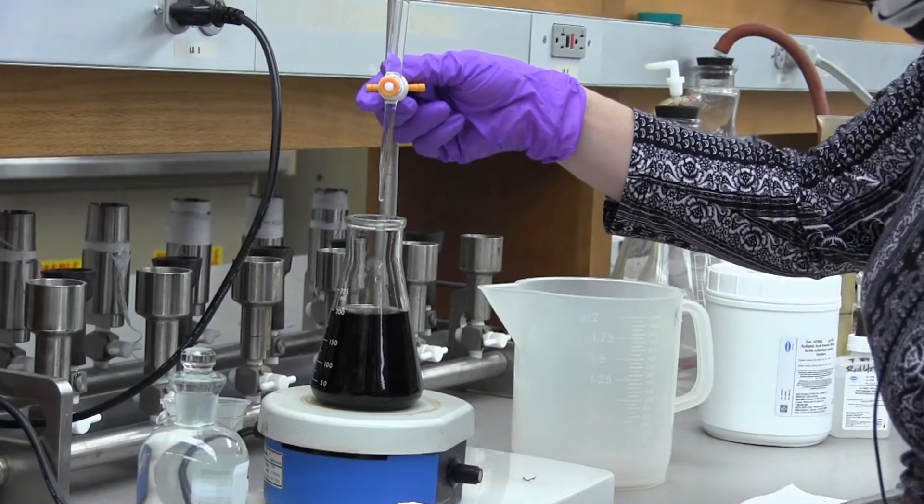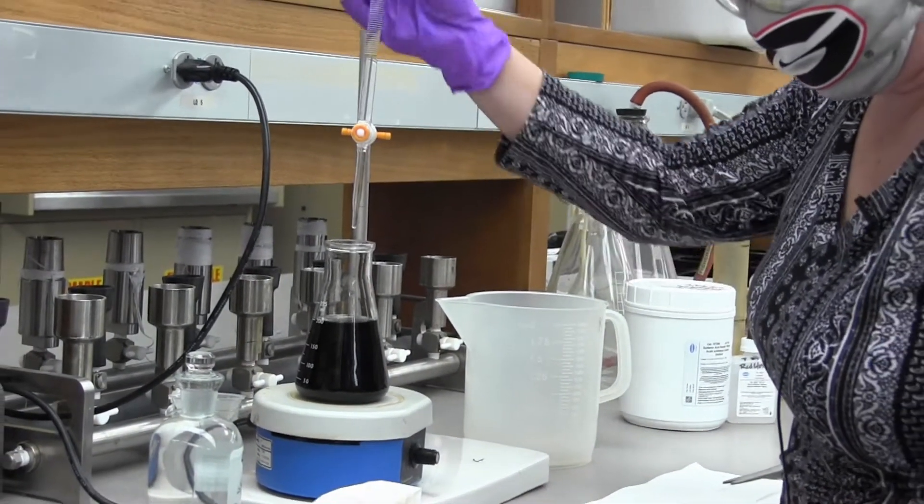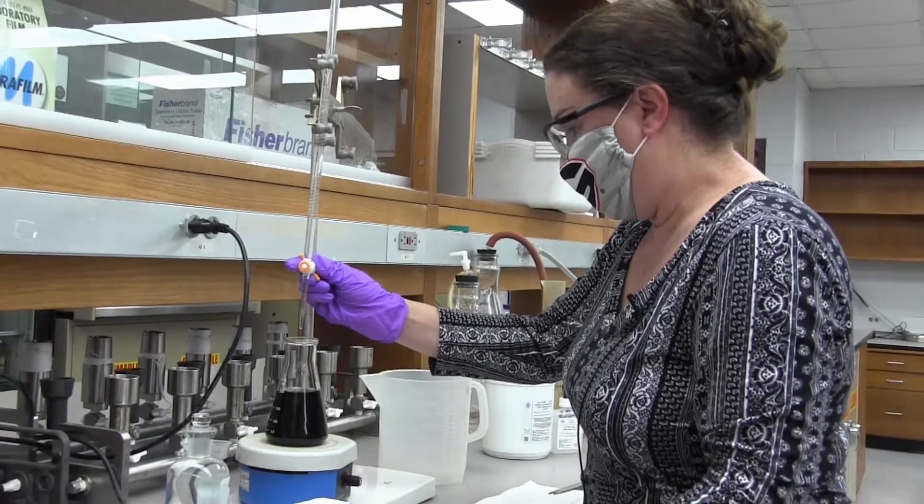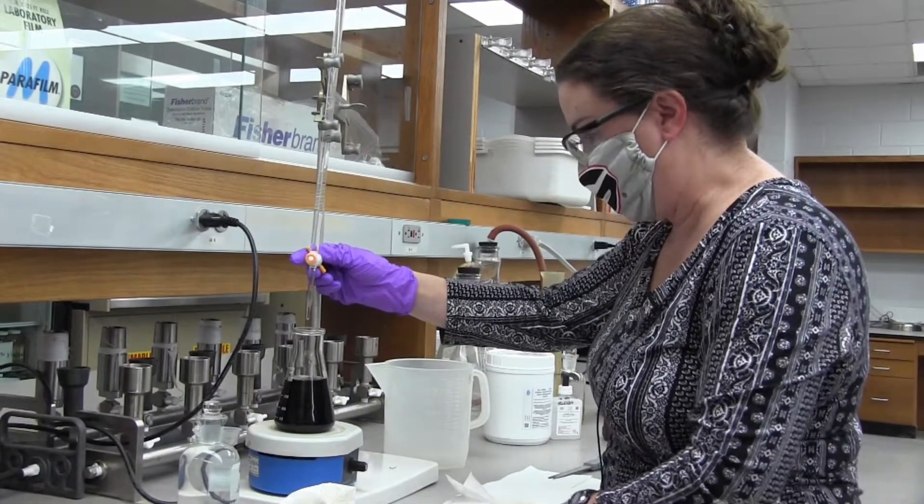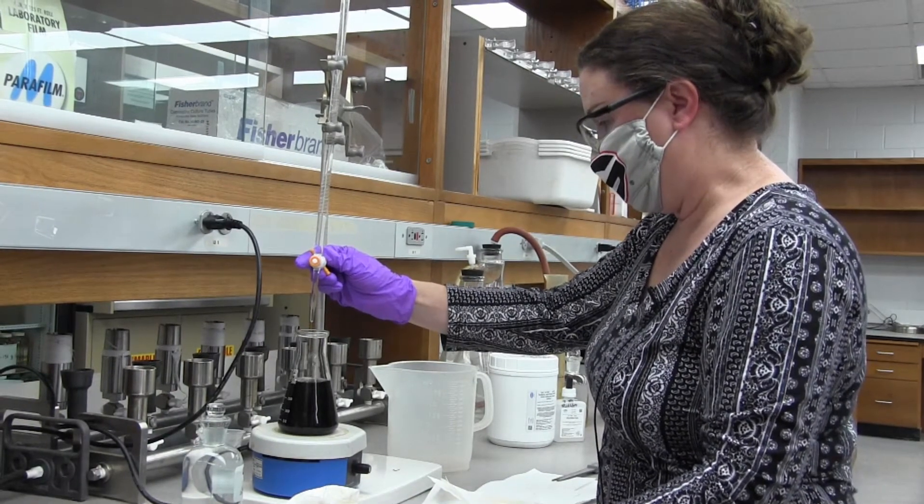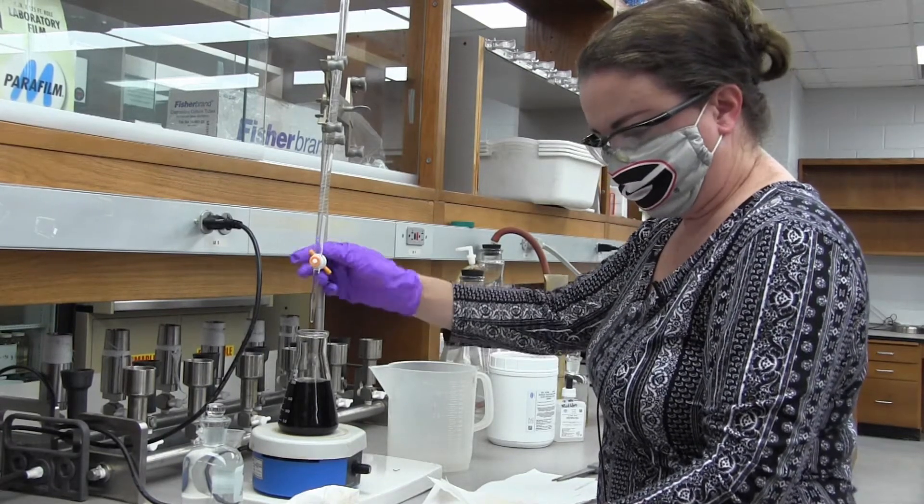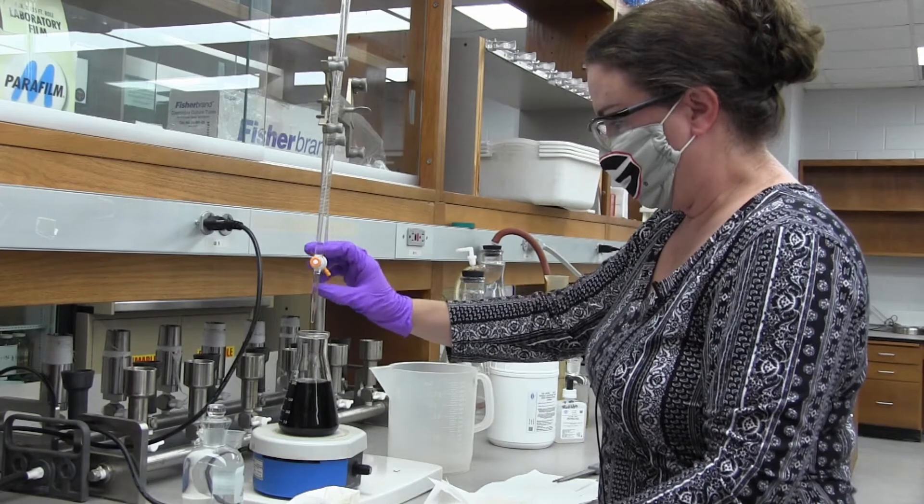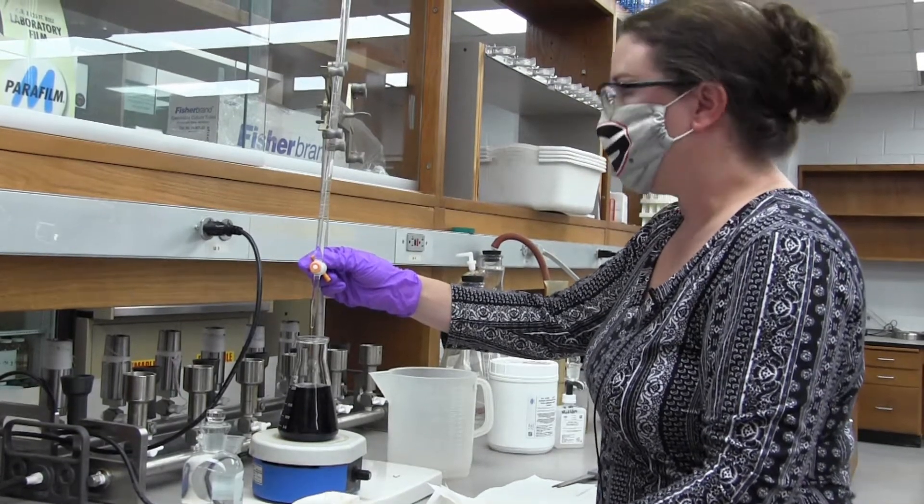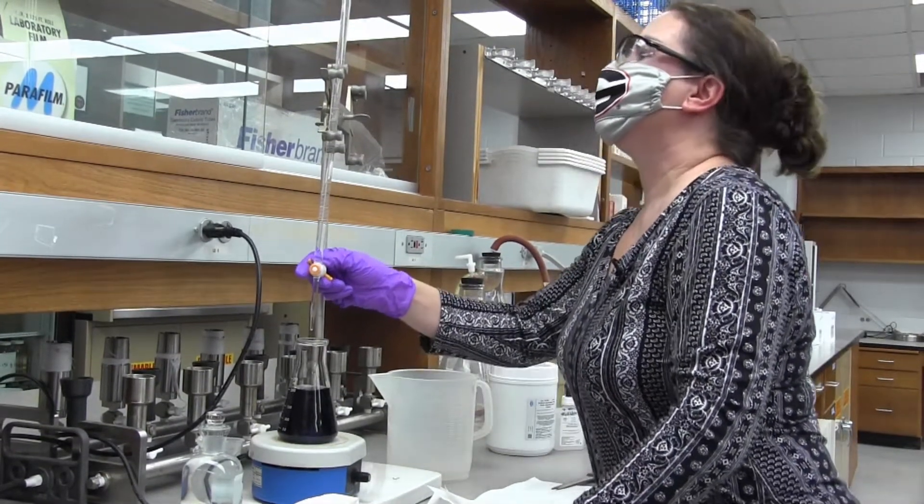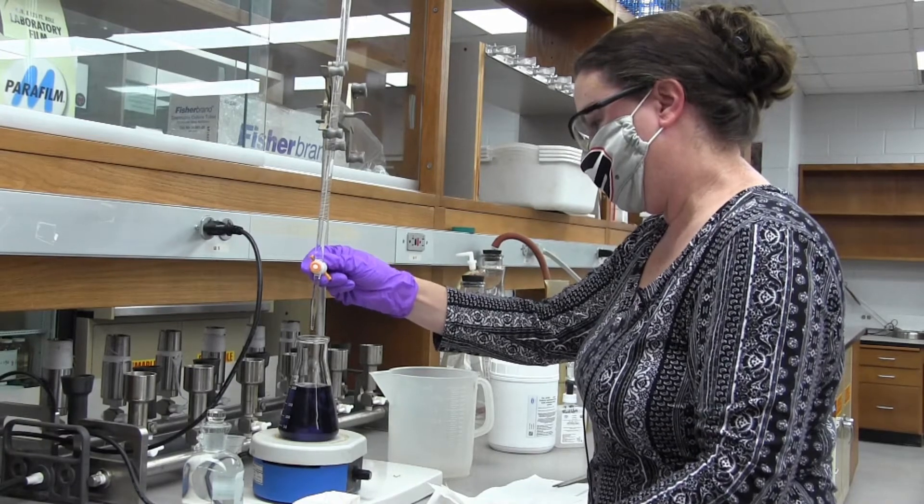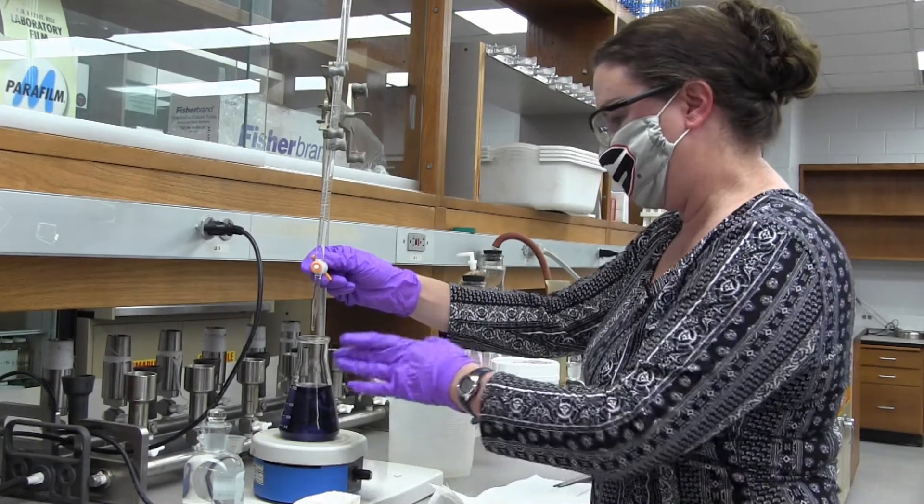Now we're going to continue titrating until the solution changes from dark blue to colorless. You don't have to titrate slowly at first, but when it starts getting lighter you want to slow down the titration or you'll miss your end point. Right now I'm about seven mils. I'm just getting it to a drop now.